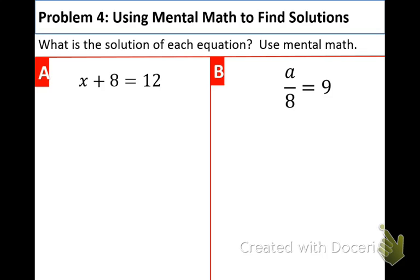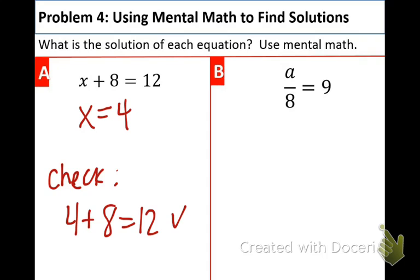I think you'll like this next example. It's not too bad. It says we need to use mental math to find the solutions. So in part A, this is what we're thinking to ourselves. What number plus 8 equals 12? Well, I think it's 4. x equals 4. So let's check real quick. And the way that you check is you just plug in the 4. 4 plus 8 equals 12. Yes. We're done with that.